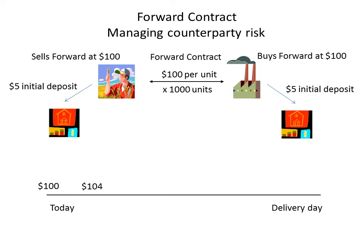So at the start of the forward contract the contract is struck and the deposits are handed over to the custodian. Let's suppose that over time we glance into the forward market and we see that forward contracts for the same settlement day are now trading at $104. What happens is that on the appropriate date the custodian collects $4 per unit from the farmer. The idea being that should the farmer default shortly after, this isn't a problem for the manufacturer — the manufacturer would have to go into the forward market and take out a new forward contract at $104, but they are at least compensated the $4 from the custodian of the farmer. So the manufacturer hasn't been disadvantaged.